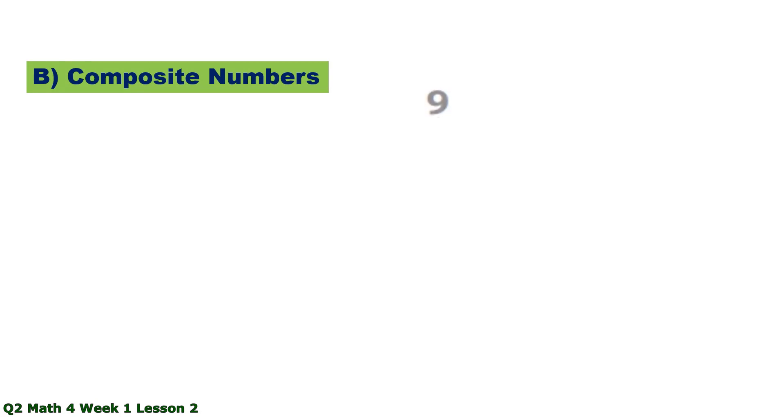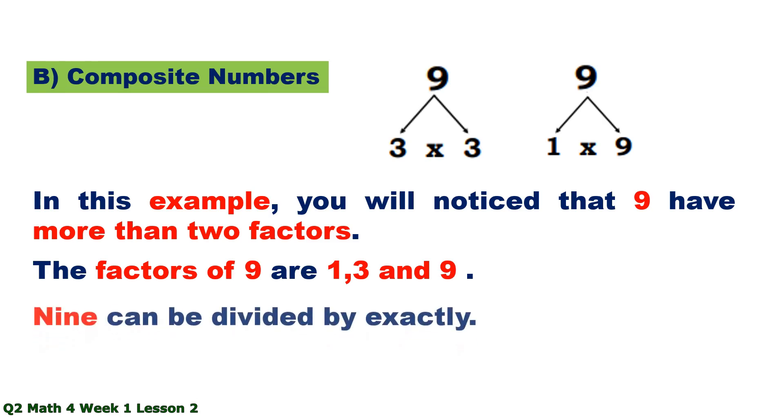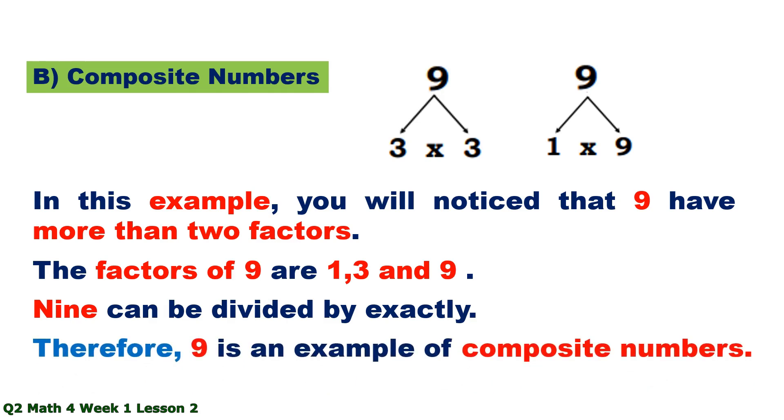Composite numbers. Factors of 9 are 3 times 3 and 1 times 9. In this example, you will notice that 9 has more than two factors. The factors of 9 are 1, 3, and 9. 9 can be divided exactly. Therefore, 9 is an example of composite numbers.